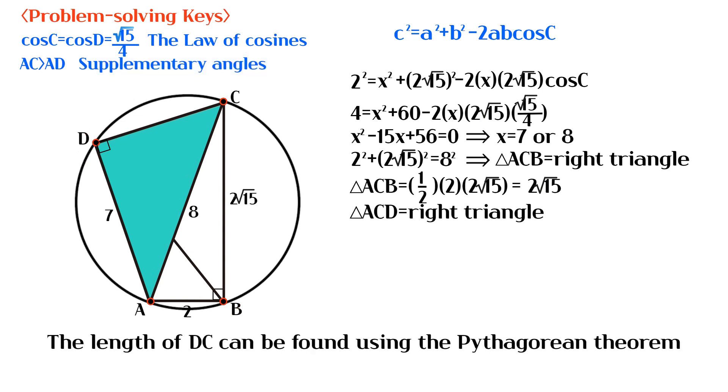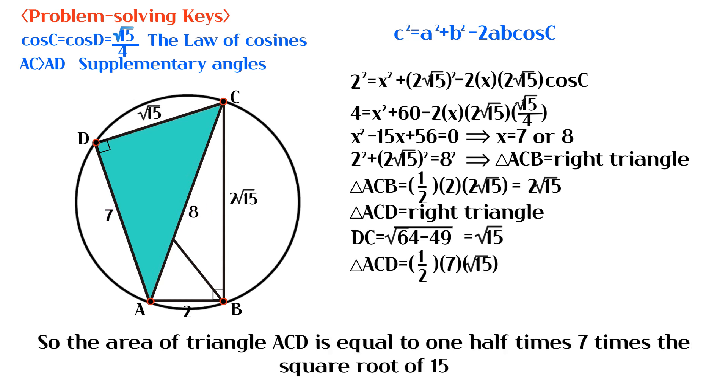The length of DC can be found using the Pythagorean theorem. So the area of triangle ACD is equal to 1 half times 7 times the square root of 15.